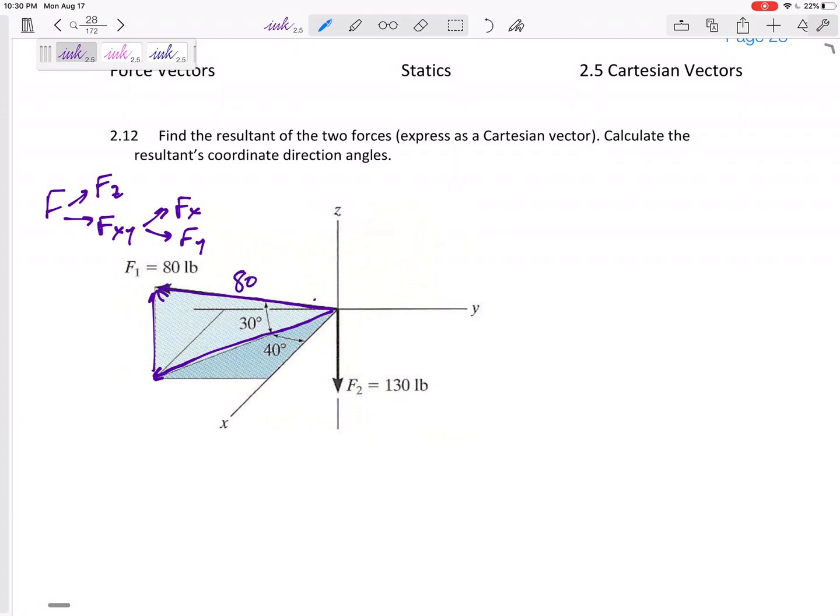It's a right triangle with a 30 degree angle, and so I say if this is 80, then this component would be 80 sine 30, this component would be 80 cosine 30. Right, that's what I'm talking about with this two-dimensional problem right here.